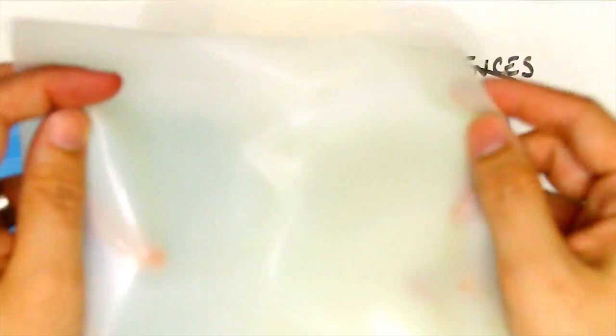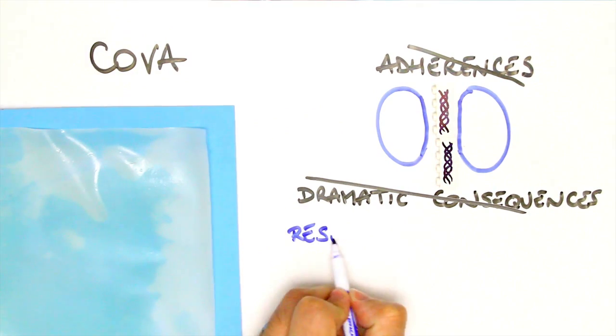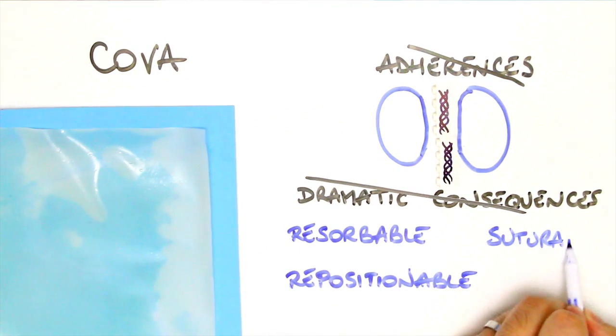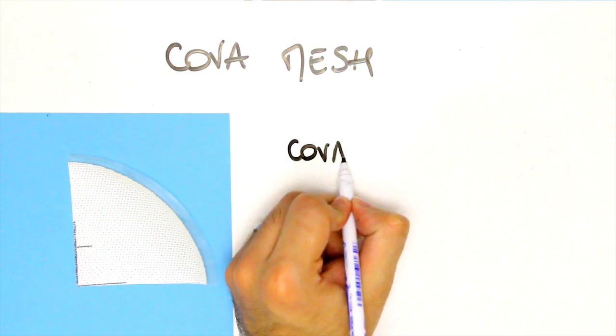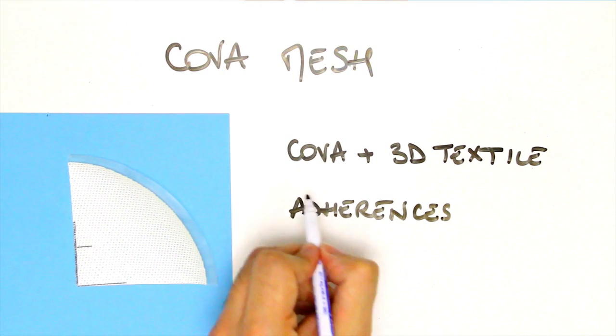Unlike gels or other membranes currently on the market, COVA is flexible, resistant, resorbable, repositionable, and suturable. For abdominal reinforcement, COVA mesh, a COVA membrane reinforced by a 3D textile, was developed to prevent adherences and efficiently reinforce the abdominal wall.